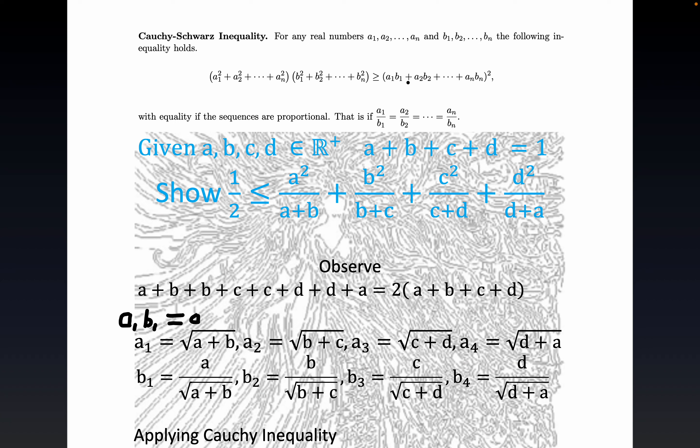This is the, you can think this is the inner product squared of a pair of n-dimensional vectors and this is the product of their magnitude squared.